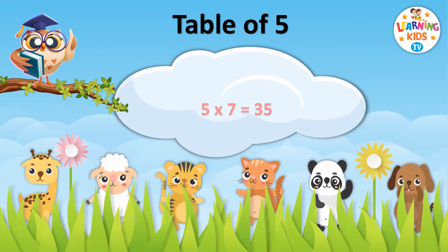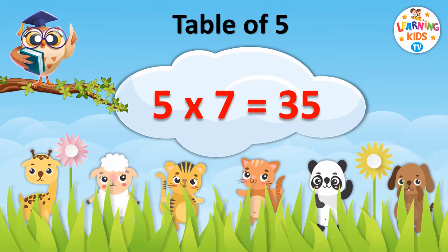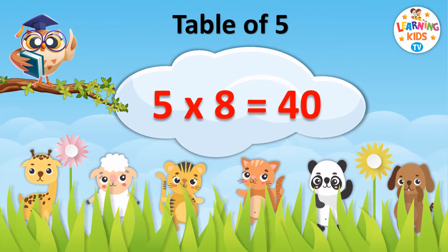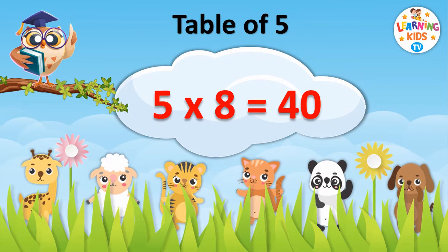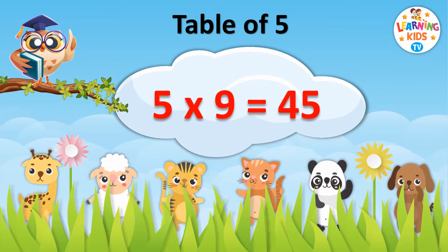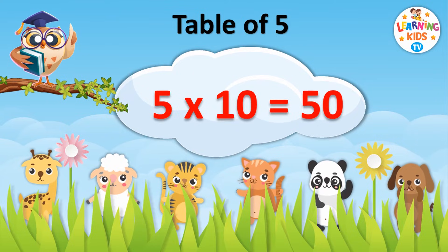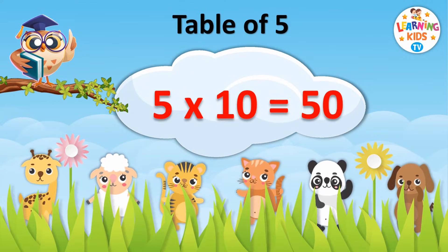5 sevens are 35. 5 eights are 40. 5 nines are 45. 5 tens are 50.